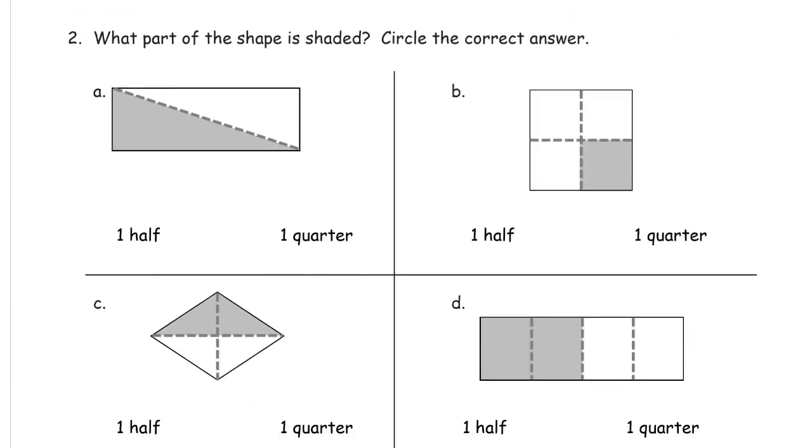Now, which part of the shape is shaded? Circle the correct answer. It's either a half or a quarter. Well, there's only two parts here, so that's half. And here we have four parts, so it can't be half, because there's only one of them shaded, so that's one of the quarters.